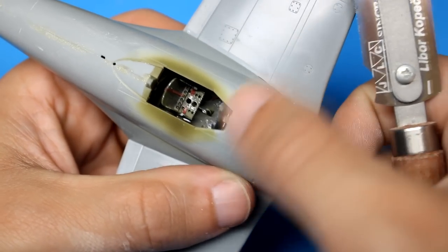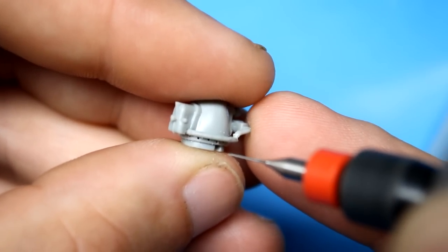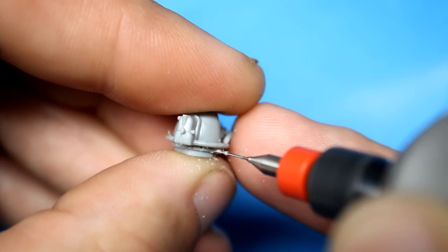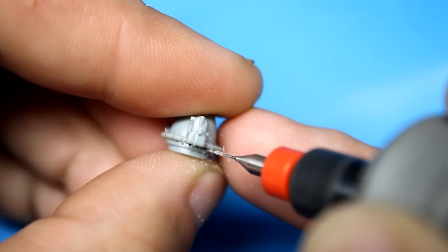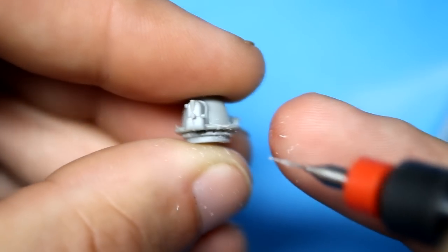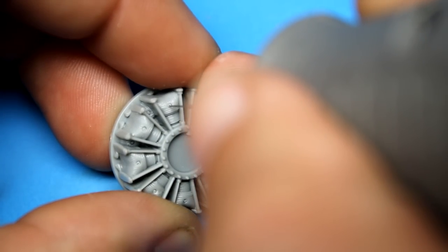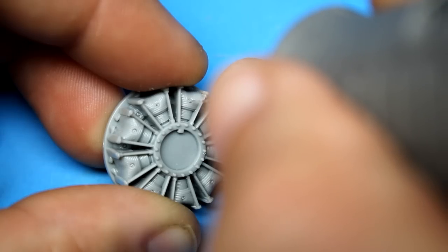Hasegawa gives you a really nice detailed engine for this kit. And the only thing I did to improve it was to add some spark plug wires. Now, I kind of cheated and drilled holes into the crankcase cover. And you're not going to see this because the spinner on this aircraft is quite large. And what this is going to do is allow me to neatly run two wires to each cylinder. I like to use lead wire for this because it's very soft and easy to bend. And then I'll secure it with super glue.